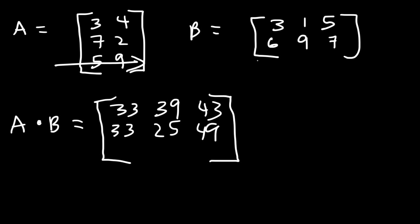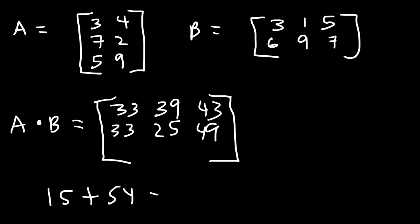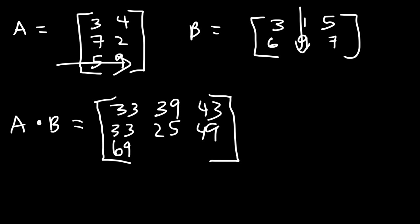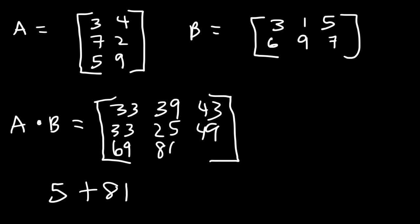So now let's multiply the third row by the first column. Next we have row 3 times column 2. So we have 5 times 1 which is 5, and then 9 times 9 which is 81. So that adds up to 86.